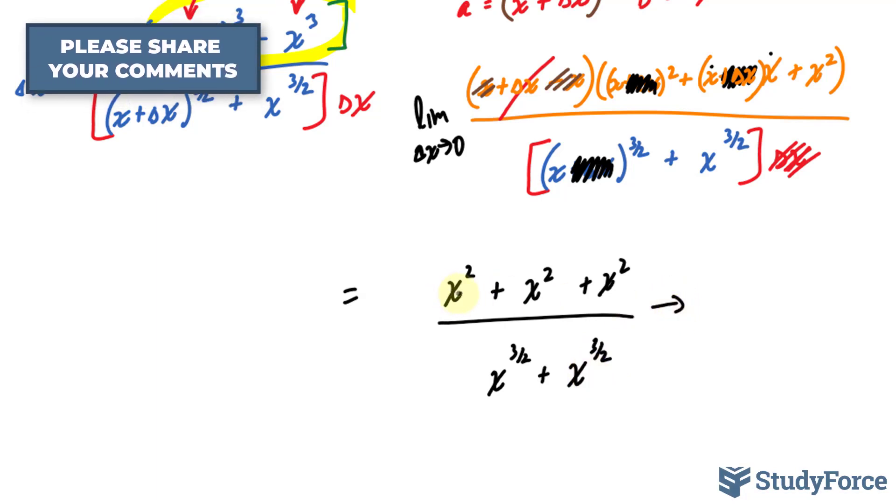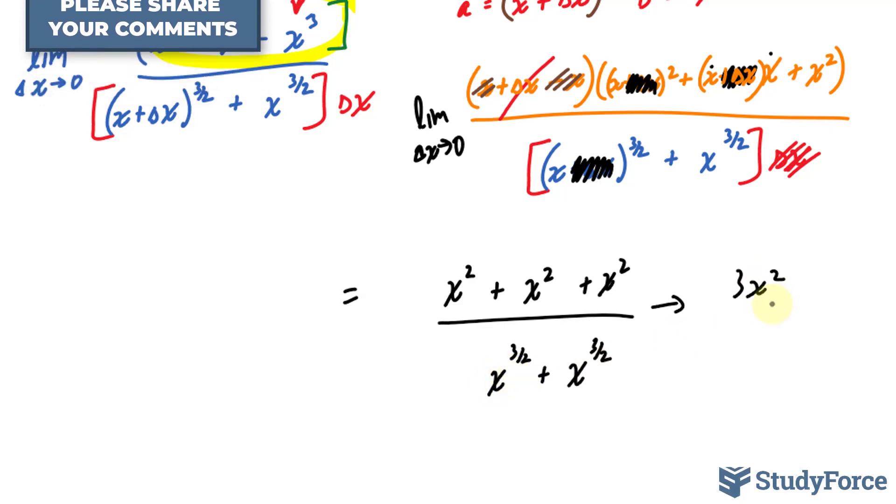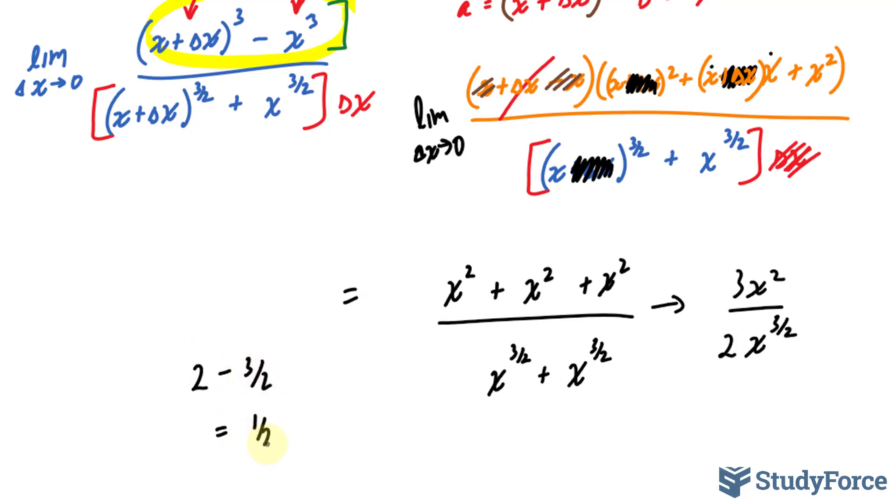Let's simplify further. We have three of these so we have three x squared and over here we have two of those. Using the laws of exponents we have x here and an x here, two minus three over two which gives you one over two.